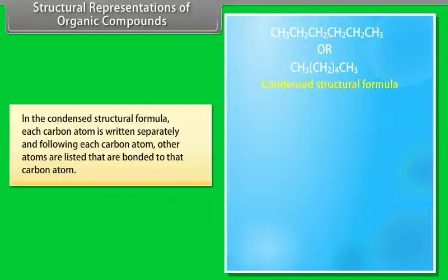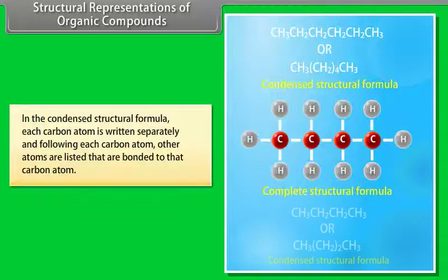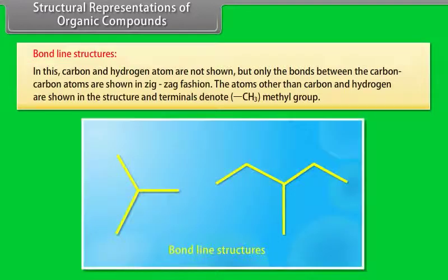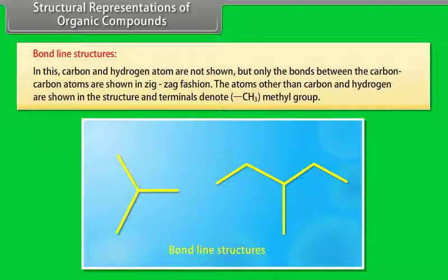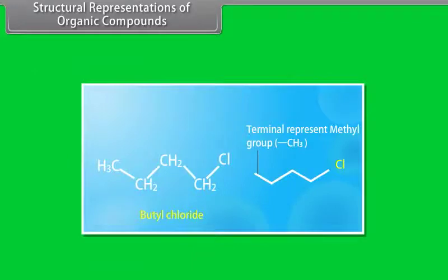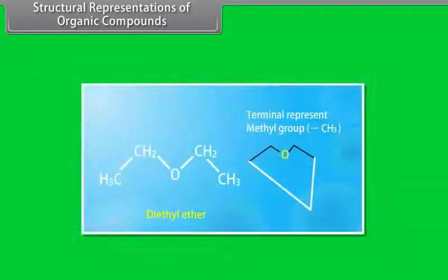In the condensed structural formula, each carbon atom is written separately, and following each carbon atom, the other atoms bonded to it are listed. In bond-line structures, carbon and hydrogen atoms are not shown; only the bonds between carbon-carbon atoms are shown in zigzag fashion. Atoms other than carbon and hydrogen are shown, and terminal points denote methyl groups. Examples include butyl chloride, propene, cyclohexane, and diethyl ether.